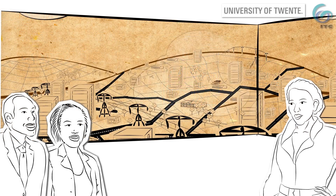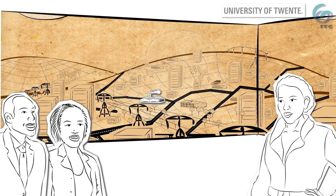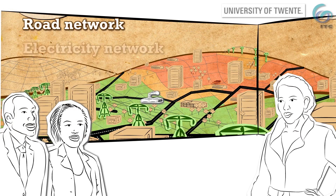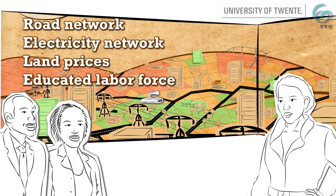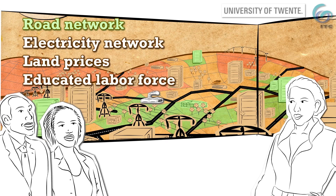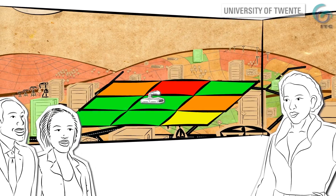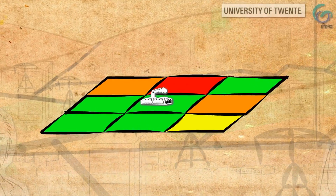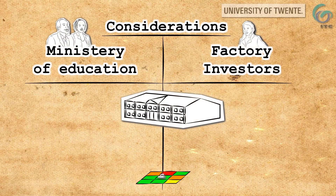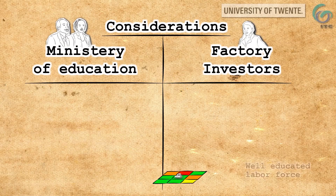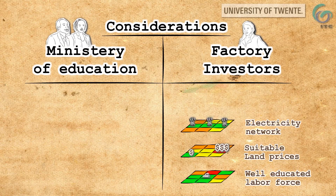Let's go back to our simple example of the investor who wants to build a factory. The investor wants a good road and electricity network, good land prices and a well-educated labour force. For each consideration of a decision maker, we define a criterion in the form of a criterion map. More suitable locations are green, less suitable locations are red. Also, a Ministry of Education wants to invest in schools. For both the factory investor and the ministry, you establish all their criteria maps.